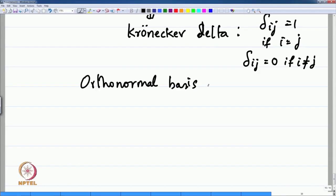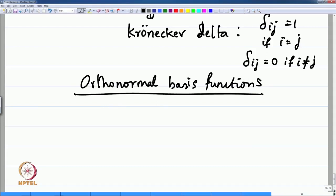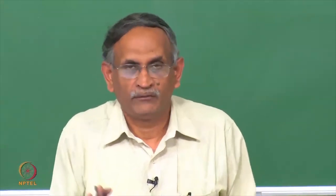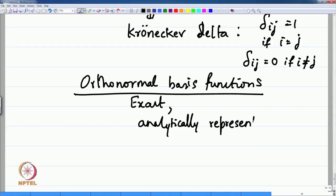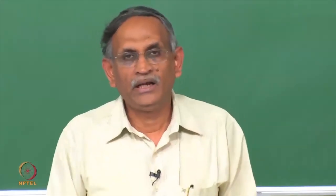These orthonormal hydrogen atom wave functions can serve as basis functions for problems involving other atoms or systems of nuclei and electrons. They are analytically known — analytically represented — which is unique, since for any atom with more than one electron, we do not have such analytic solutions. Therefore, the hydrogen atom solutions are extremely important.